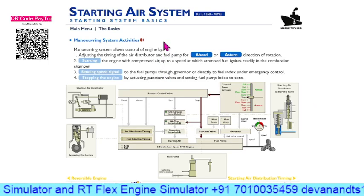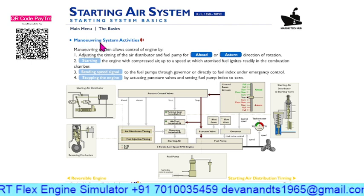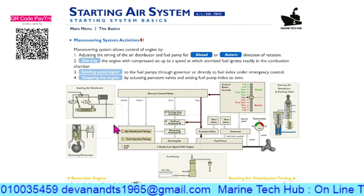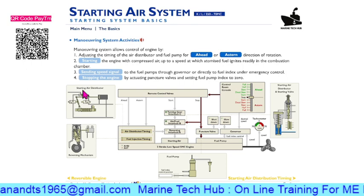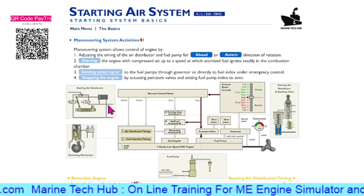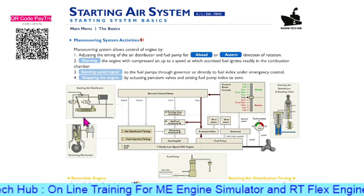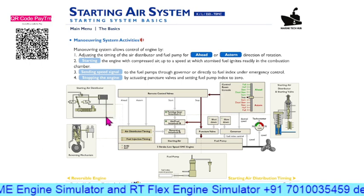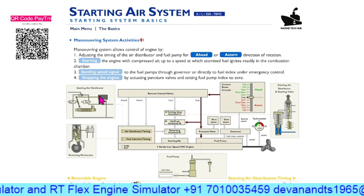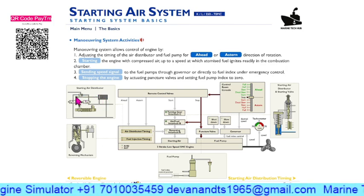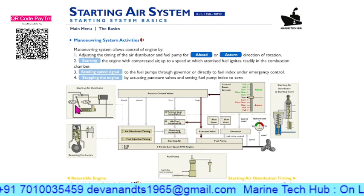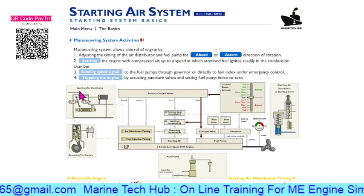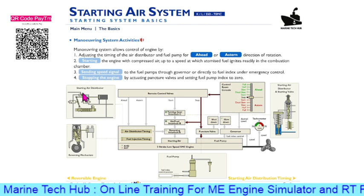Welcome to Marine Tech Hub. Today I am going to explain about the Manoeuvring system with respect to the MC engine. In this picture you can see the starting air distributor. When we start the engine, the header has turned, so the air will come from here and push this piston. Once this piston is pushed inside, this will activate this block so that the air which was coming here will go here and then into the system.